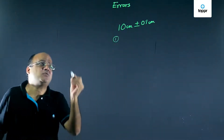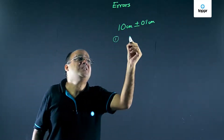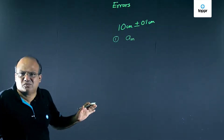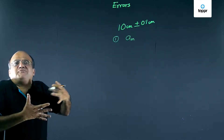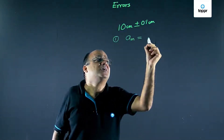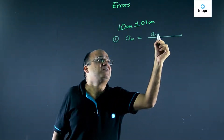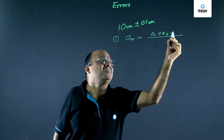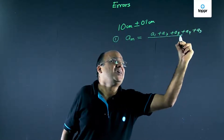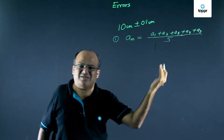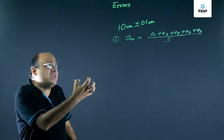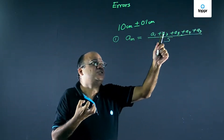The first thing we need to learn is mean value. Suppose you take five readings — then the mean value will be a1 plus a2 plus a3 plus a4 plus a5, divided by 5. Simple. Finding the average — mean and average are the same thing. So this mean value will be better than each of these individual readings.